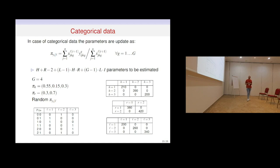Here is another example: a simulated dataset with the same number of groups and latent classes, but with five categorical variables each having four categories. In general, the number of distribution parameters is (g-1) times l_i, where l_i is the number of categories. For a well-separated dataset, where all observations in each combination of higher-level latent classes fall in only one lower-level latent class, the algorithm recovers exactly the true classification, as shown in the tables.